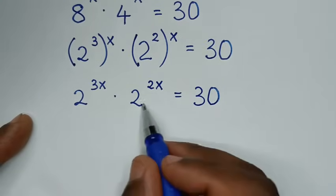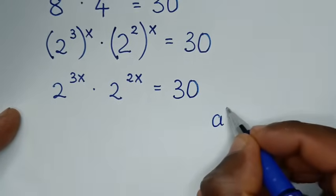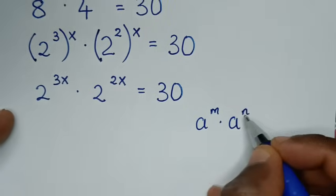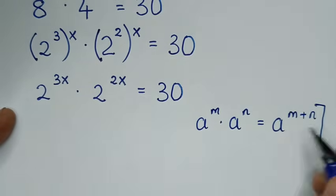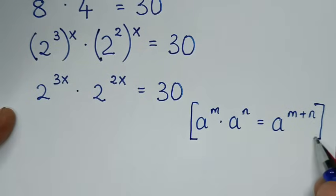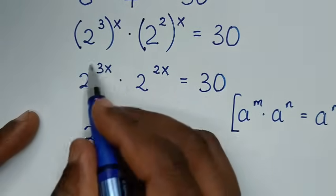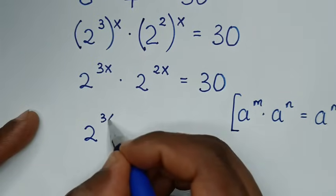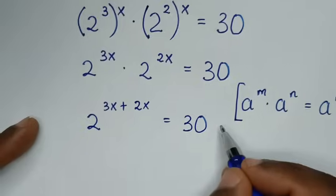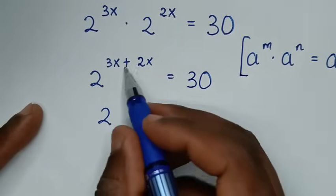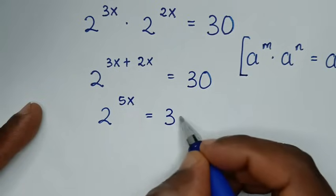From here, 2 power of 3x times 2 power of 2x — this part is in the form of a power of m times a power of n, which is equal to a power of m plus n. So from this rule we apply this form, then it will be 2 power of 3x plus 2x, which is 5x, is equal to 30.